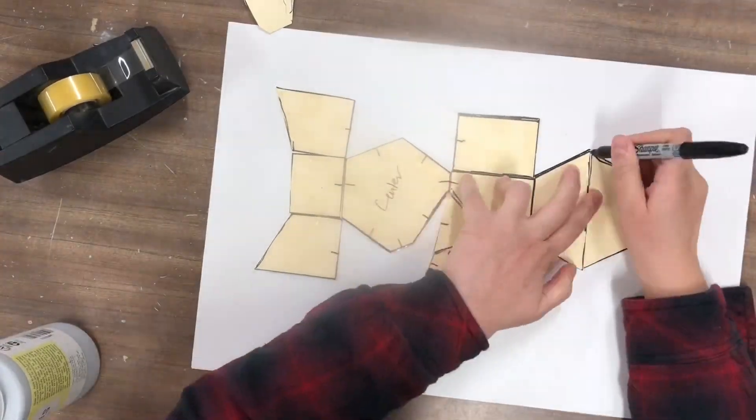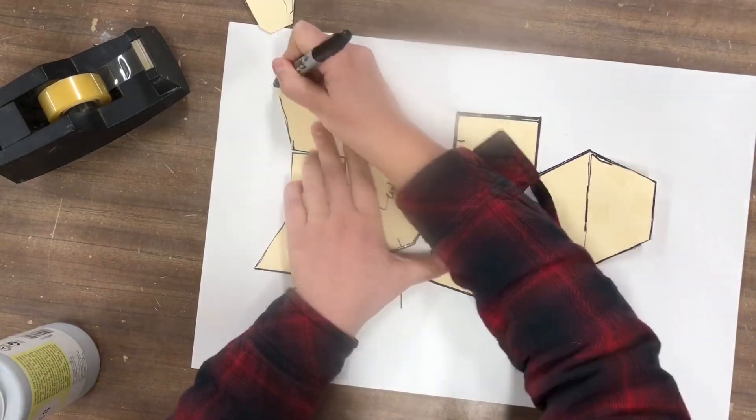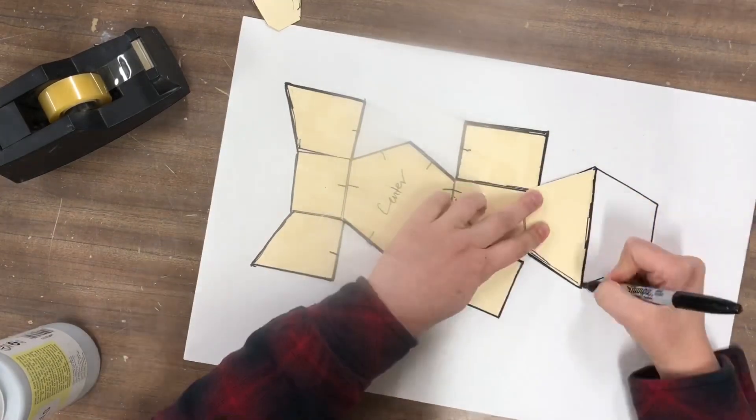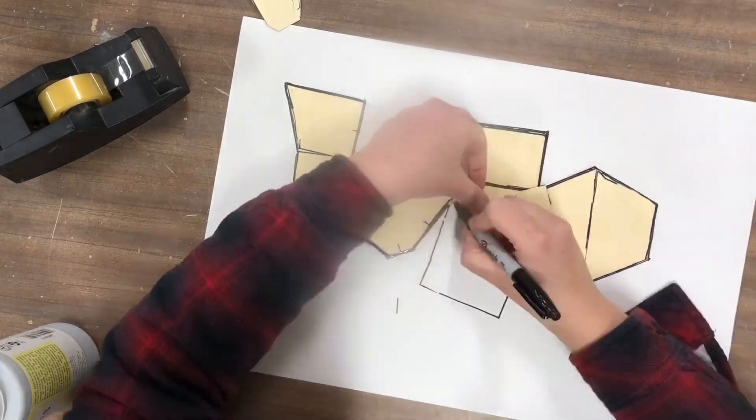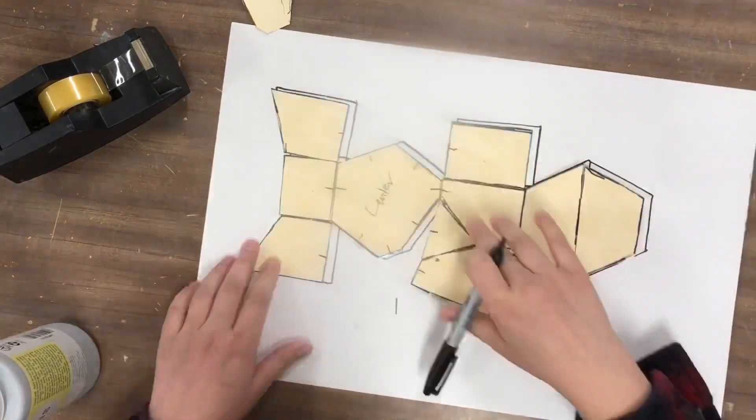When you're done rearranging the sections of your net, grab a new piece of paper and trace alongside the perimeter of your net. Also, fold alongside each of the sections, tracing alongside each of the folds located on the interior of the net.